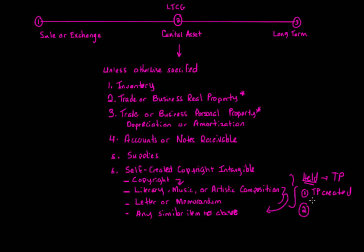The second scenario: if the item was written to the taxpayer. For example, a letter written by Abraham Lincoln to a military general during the Civil War — whoever the letter is addressed to, that recipient holds it. Similarly, if music or a poem is written to a specific person whose name is in it, and that person now holds the letter or memorandum, then it is considered not a capital asset in that taxpayer's hands.